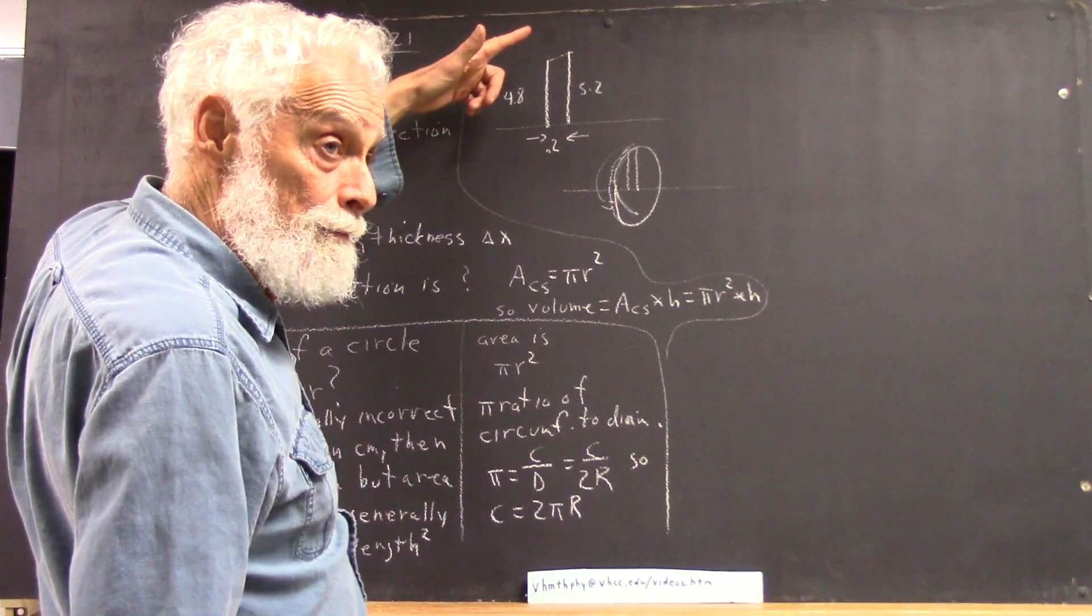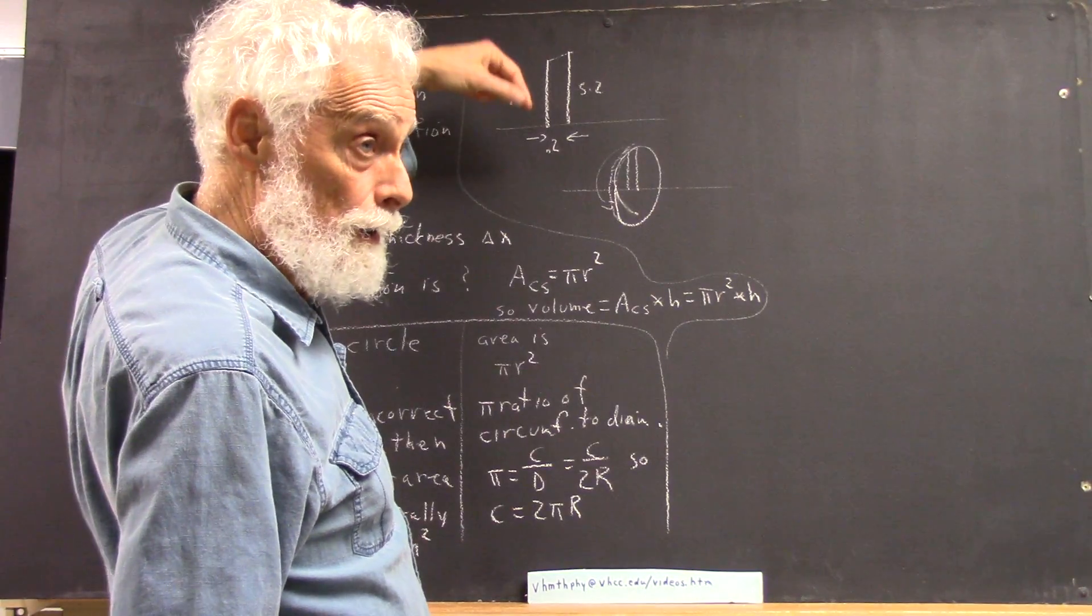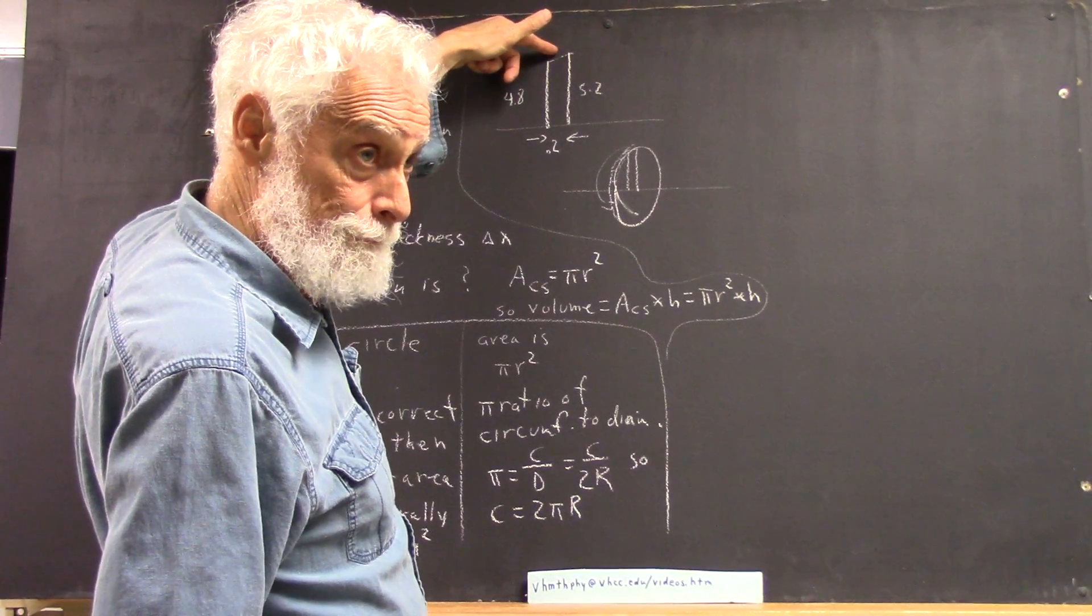This trapezoid clearly has a slope of 2, easily calculated, average altitude of 5.